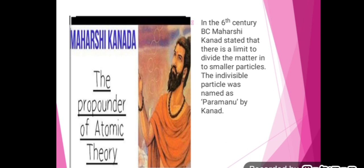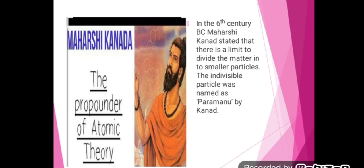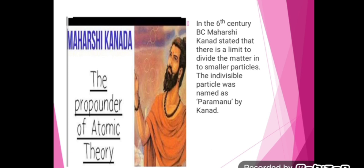In the 6th century BC, the Indian philosopher Maharshi Kanad stated that there is a limit to dividing matter into smaller particles — as we divide matter there is a point beyond which it cannot be divided further. That indivisible particle was named 'Paramanu' by Kanad. He also stated that Paramanu is indestructible, meaning it cannot be destroyed. In modern times, scientists explained the nature and internal structure of the atom through experiments, beginning with Dalton's atomic theory.